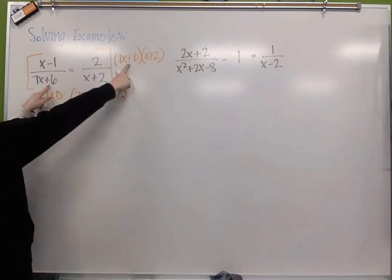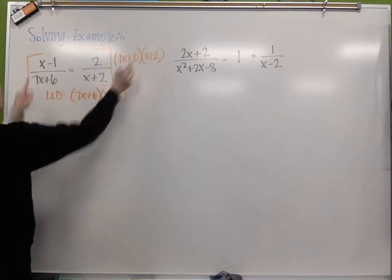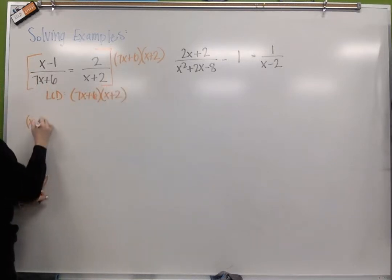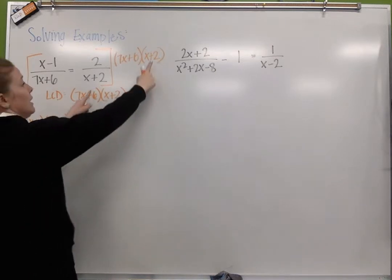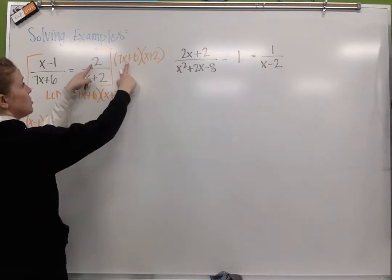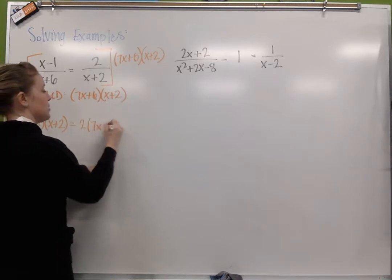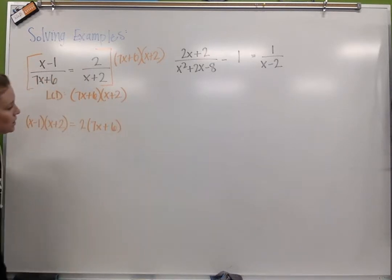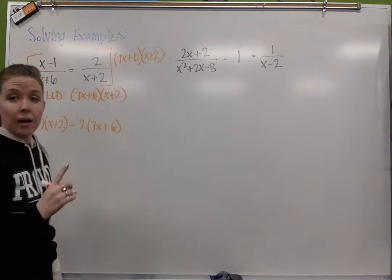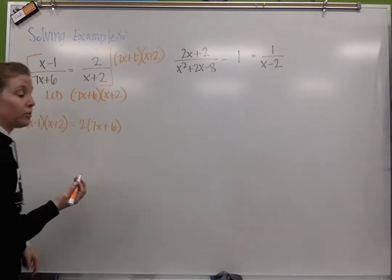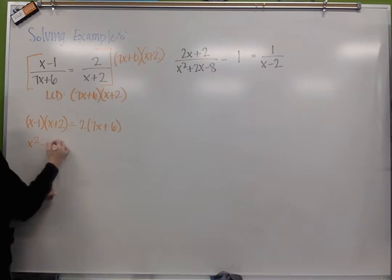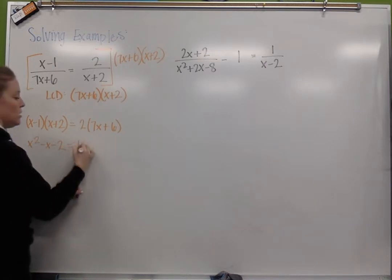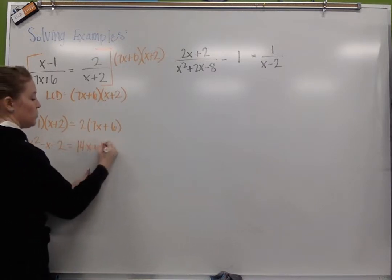Here, 7x plus 6 cancels, so I'm left with x minus 1 times x plus 2. Here, my x plus 2 is cancelled, so I'm left with 2 times 7x plus 6. So I've cancelled my denominators, I'm ready to just simplify and solve. When I distribute here I'm going to get x squared minus x minus 2 equals 14x plus 12.